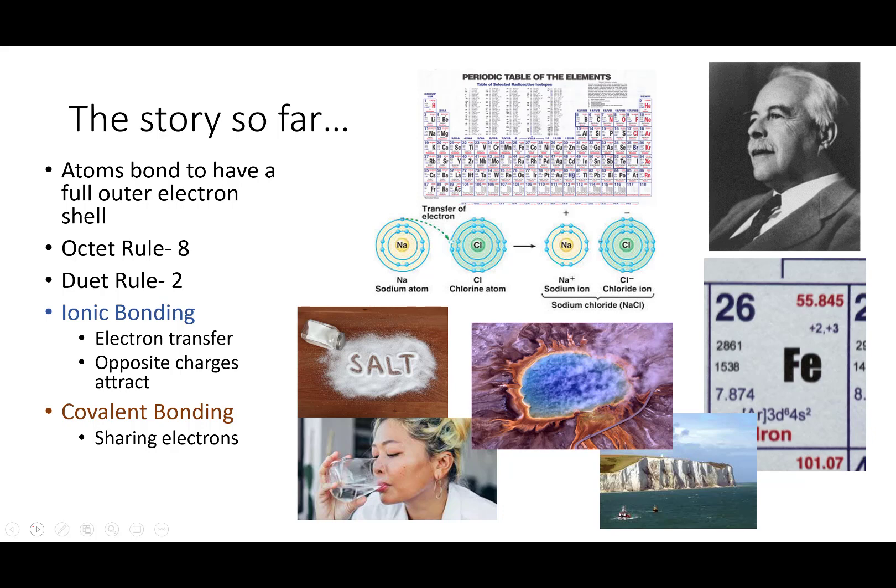The story so far is we have been talking about why atoms bond, and they bond to have a full octet, a full eight in their outer electron energy level, or a full two if they are tiny little things like hydrogen, lithium, and beryllium. There are two primary ways that atoms can do this. Ionic bonding, and last week we talked a lot about that, and that involves a two-step process. Atoms transfer electrons. One is a big, the non-metals are big pullers on electrons. They want those electrons.